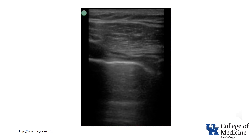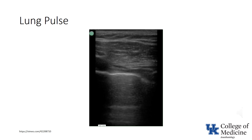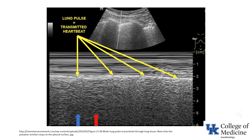Watch this video for four or five seconds and answer the question of whether lung sliding is present or absent. While there is clearly motion of the pleural line, it is synchronous with the heart rate, not the respiratory rate. This is termed a lung pulse. This M-mode image of a lung pulse clearly demonstrates that the image alternates between a seashore sign (blue arrow) and a barcode sign (red arrow). The presence of a lung pulse indicates that the underlying lung is not being ventilated.